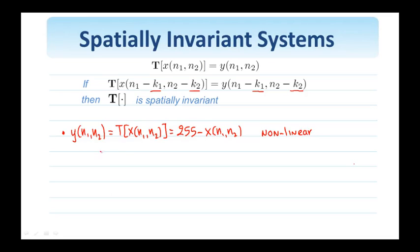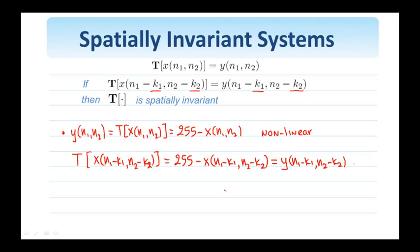Now, if I shift the input to the system by x(n1 minus k1, n2 minus k2), so I shift it by k1, k2, and I put this as input to the system, the output is equal to 255 minus x(n1 minus k1, n2 minus k2), which is clearly equal to the shifted output. Therefore, this system is spatially invariant, SI. So the system that takes the negative of an image is non-linear, but is spatially invariant.